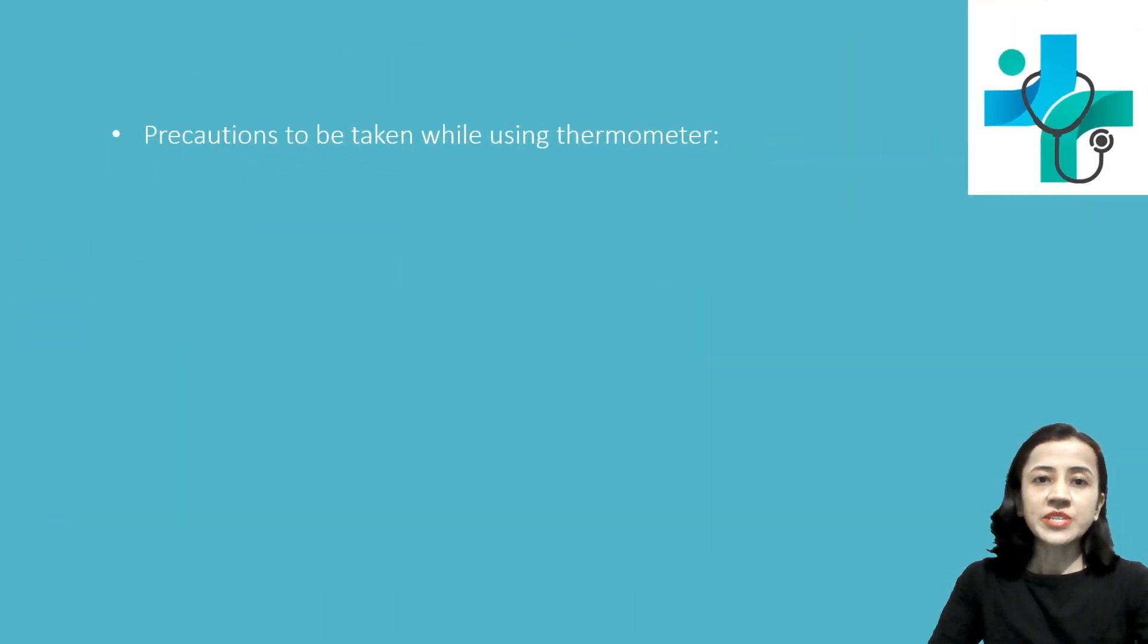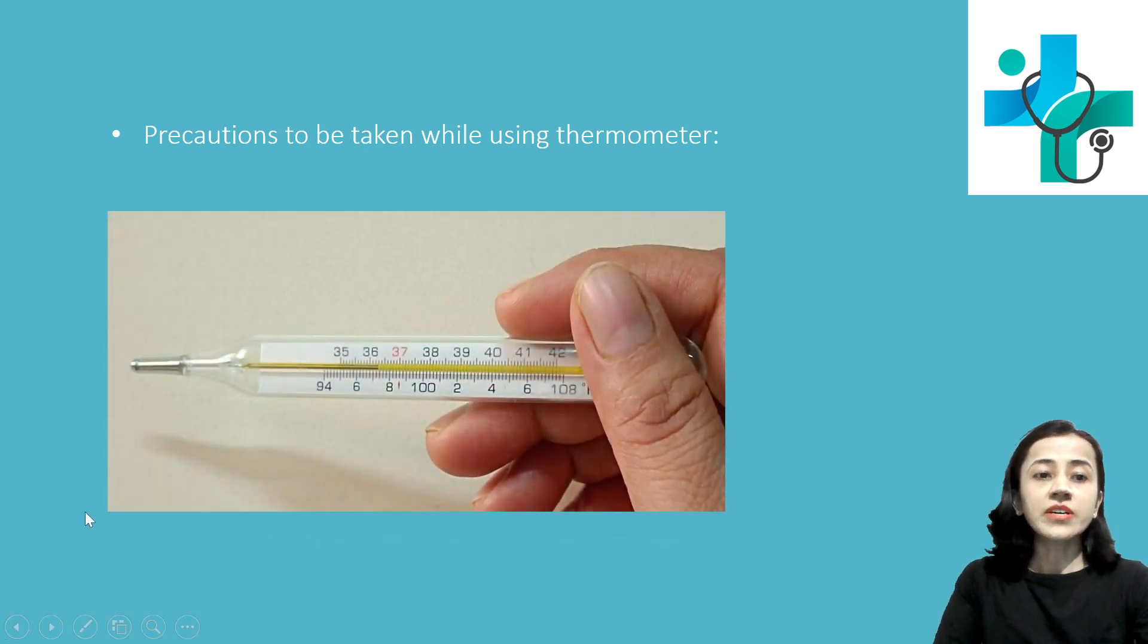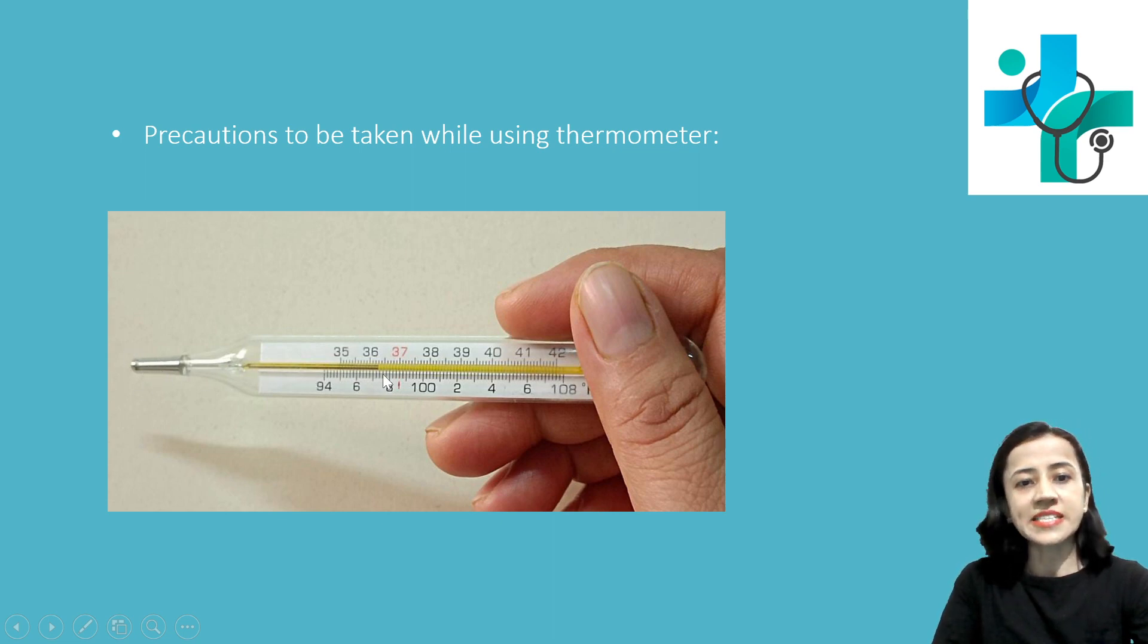Now precautions to be taken while using thermometer. One, that is never hold the thermometer here from the bulb part. Why? Because when we are holding the thermometer from the bulb part, because of the heat of our body temperature, this mercury will expand and you will not get the exact temperature.